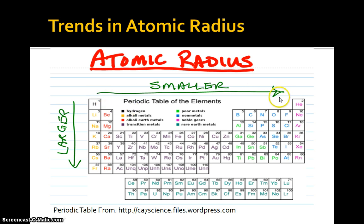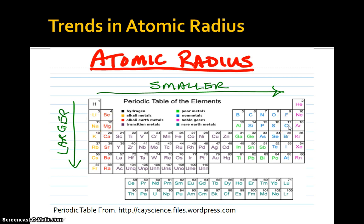First of all, trends in atomic radius: as we go across a row in the periodic table, the atom gets smaller — the atomic radius decreases. As we move down a family or column, the atom tends to get bigger. You can't quite say that atomic radius increases with atomic number, because for example sodium is a much bigger atom than chlorine, even though they're at opposite ends of the same row, and argon is even smaller still.